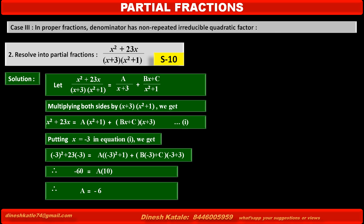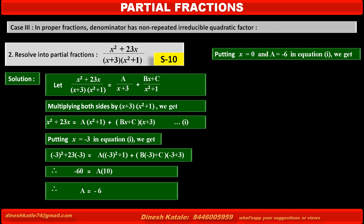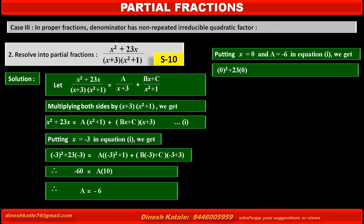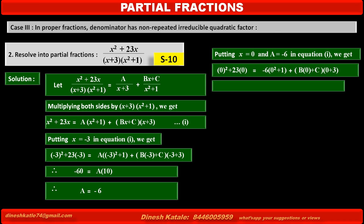To find the value of C, we cancel the B term by taking x = 0. Substituting x = 0 and A = -6 in equation 1: the left-hand side becomes 0² + 23×0 = 0. The right-hand side gives (-6)(0²+1) + (B×0 + C)(0+3). Solving the above step, we get C = 2.